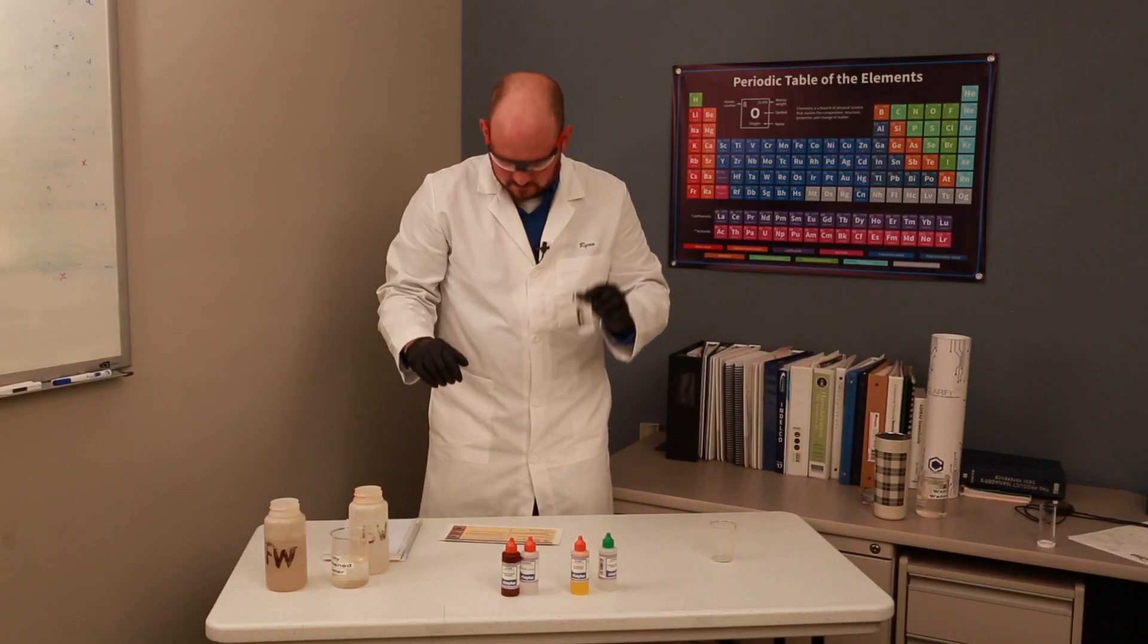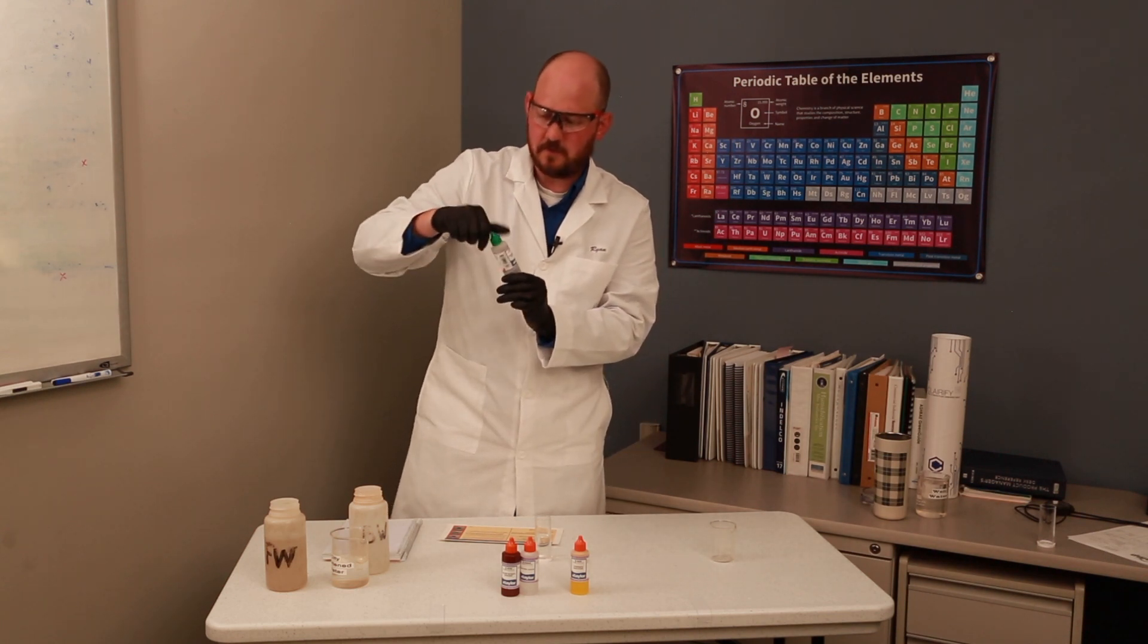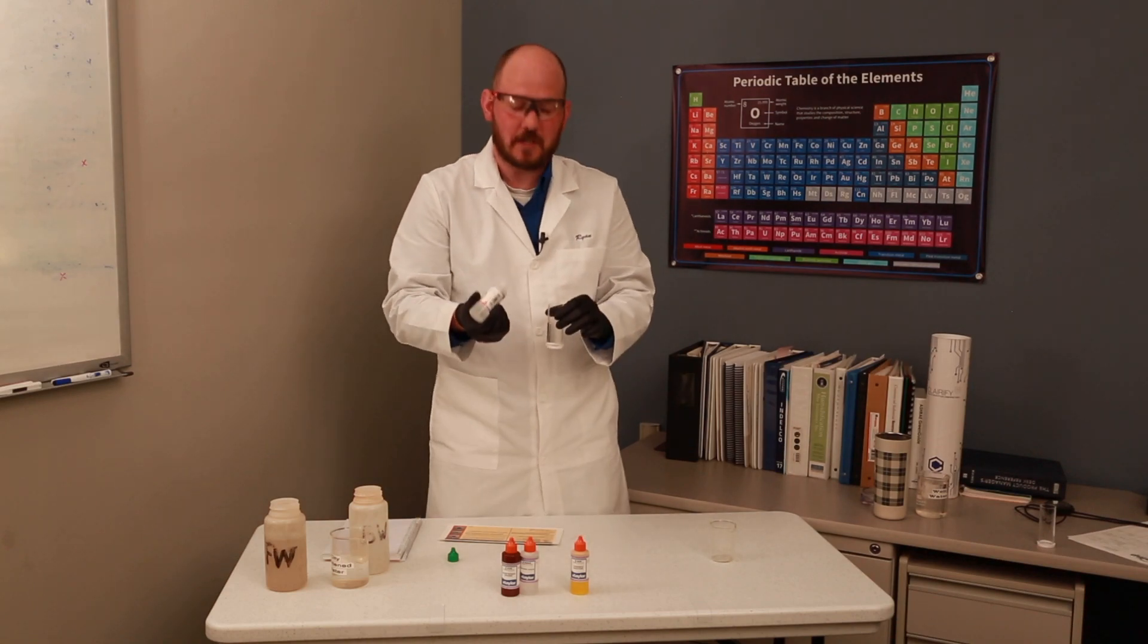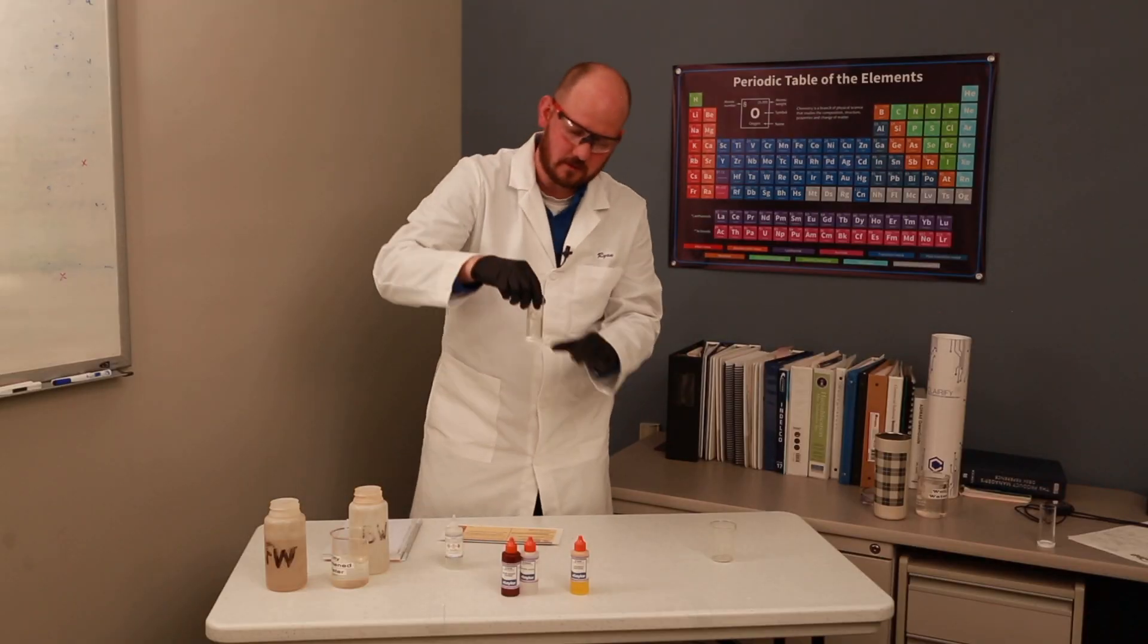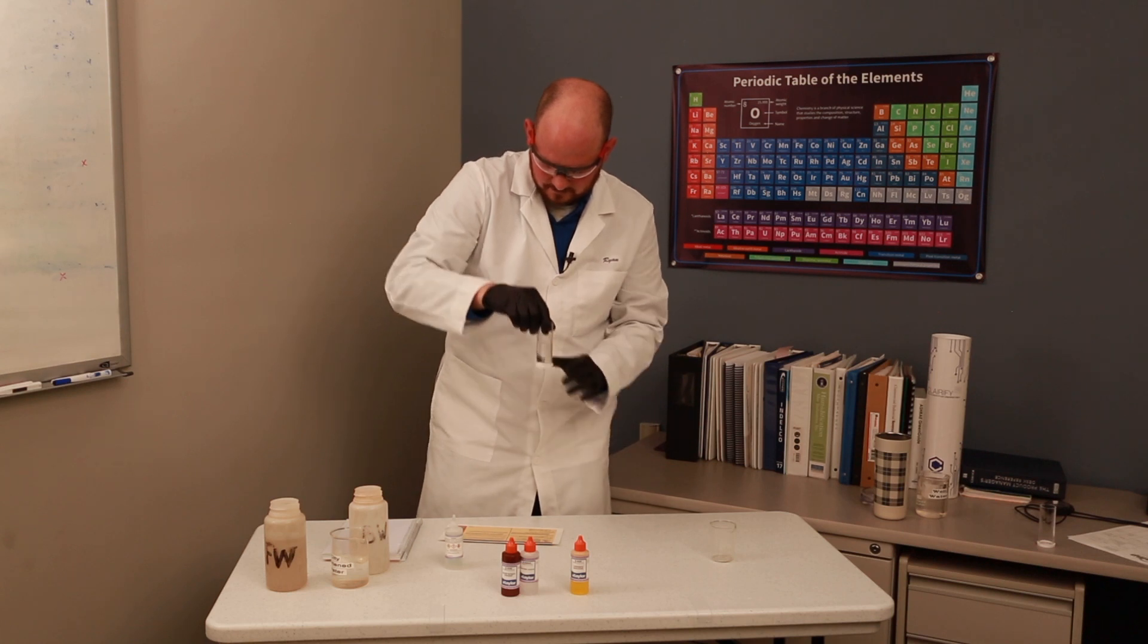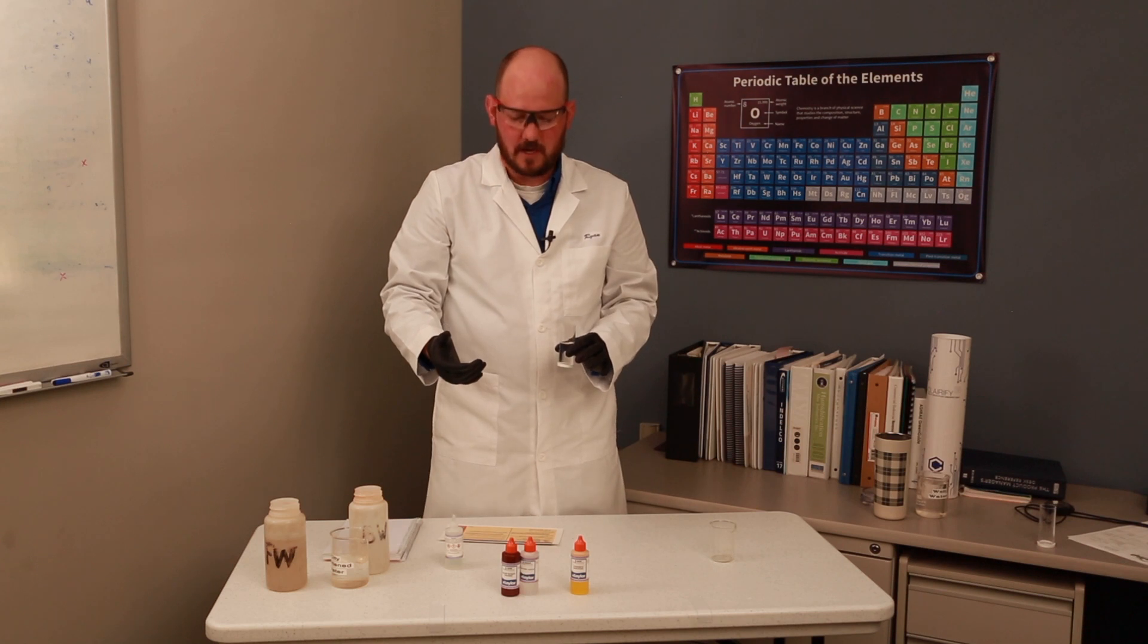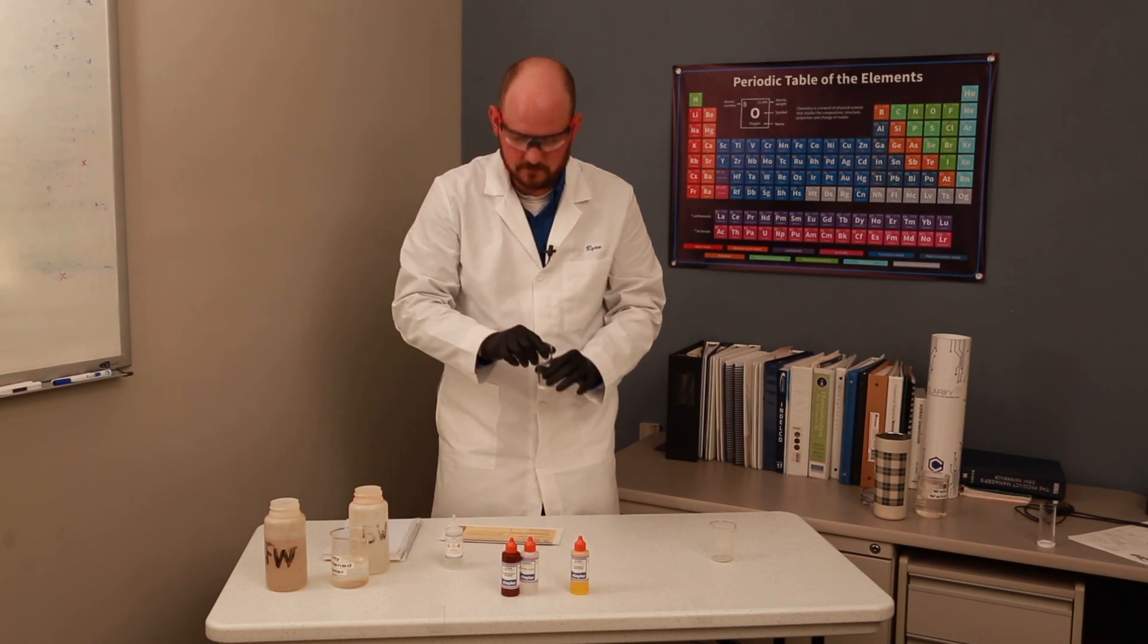The first step is to add phenolphthalein, which is this green-capped one in this case. If you bought just the chloride test kit, it would come with an orange cap. Adding two drops - if it turns colorless, we are good and can skip the next step. If this was to be pink, then we would add sulfuric acid, which I will show subsequently.